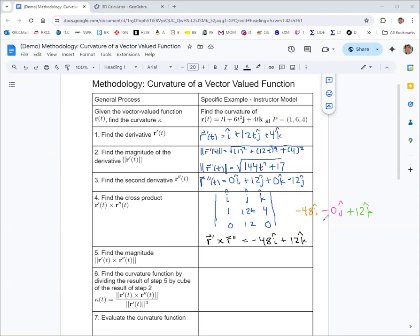Next up in step five, we're going to find the magnitude of that cross product. We've already done a magnitude in this process, so you know how that works: square root of the sum of the squares of the components. We have (-48)² + 12², and that should give you √2448.